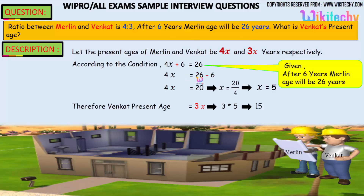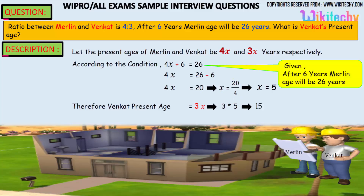4x is equal to 26 minus 6, so 4x is equal to 20. x is equal to 20 divided by 4, so the value of x is equal to 5.